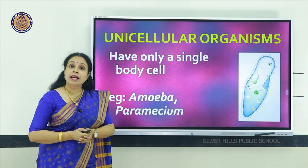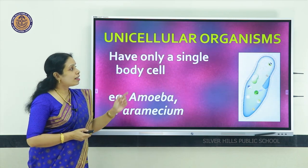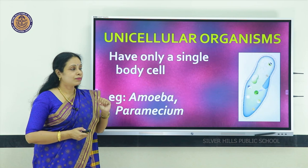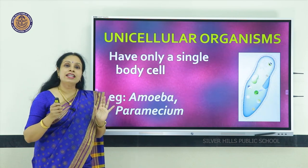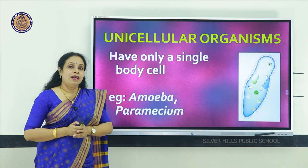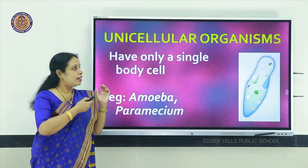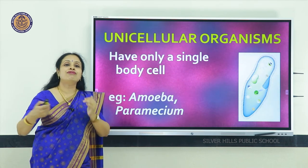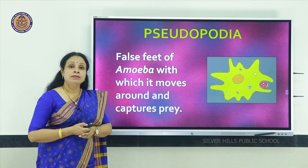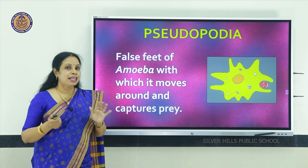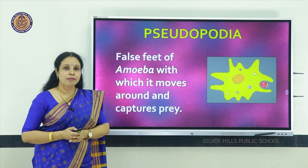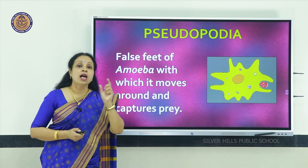Here you can see the picture of a paramecium, otherwise called the slipper animalcule. Its entire body is covered with hair-like structures called cilia, and by beating of these cilia the paramecium can propel itself forward. Another organism is the amoeba — it doesn't have any particular shape. It keeps changing its shape because it has got false feet called pseudopodia. 'Pseudo' means false, 'podos' means feet.